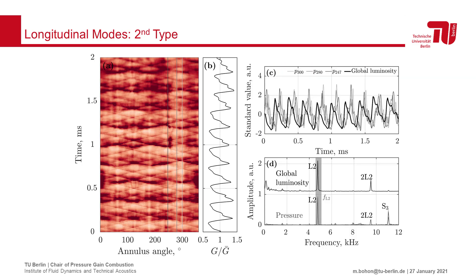When we follow the same procedure as before, comparing the globally averaged luminosity with the measured pressure traces, we can see very similar trends between the two measurements. The luminosity and pressure measurements are strongly correlated in the time domain.